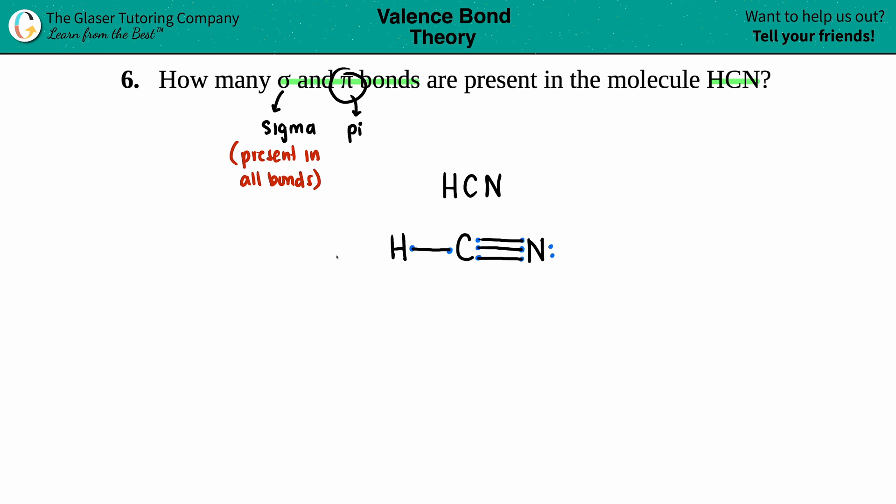That's obviously going to be a sigma bond, so I have one sigma bond here. So we'll start writing definitions. If you have a single bond, that consists of one sigma bond always, so one sigma bond.